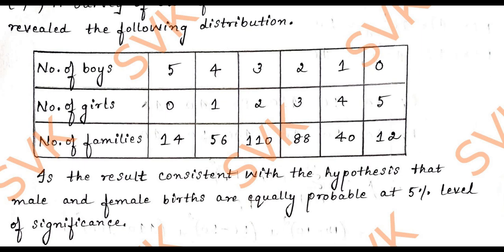This problem is based on chi-square distribution, and you are not supposed to apply the chi-square formula directly. We need to do some background work. We need to first apply binomial distribution to find out the expected frequency. The data given is the observed value, and we need to find the expected value before applying the chi-square test.